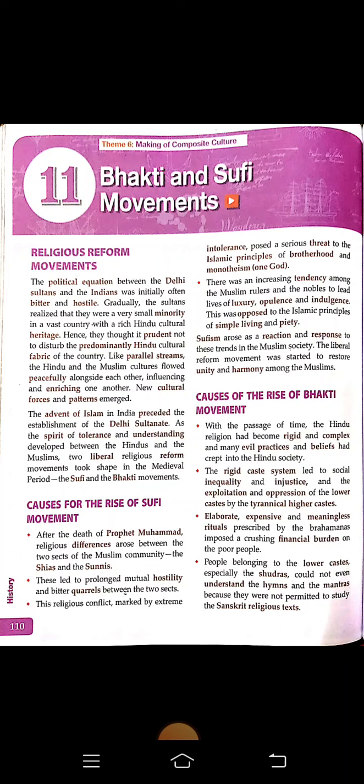The political equation between the Delhi Sultans and the Indians was initially often bitter and hostile — hostile means very violent. Gradually, the sultans realized that they were a very small minority in a vast country with a rich Hindu cultural heritage. Hence they thought it prudent — meaning they found it good — not to disturb the predominantly Hindu cultural fabric of the country.